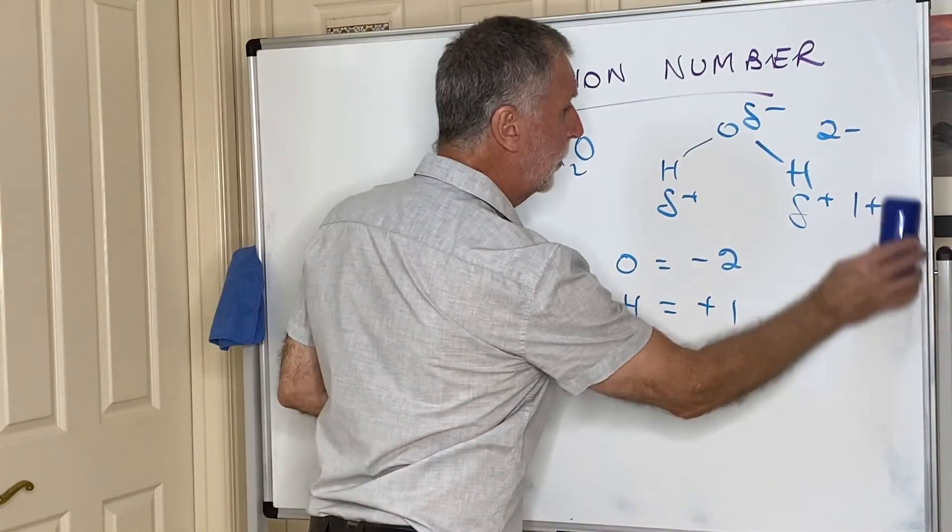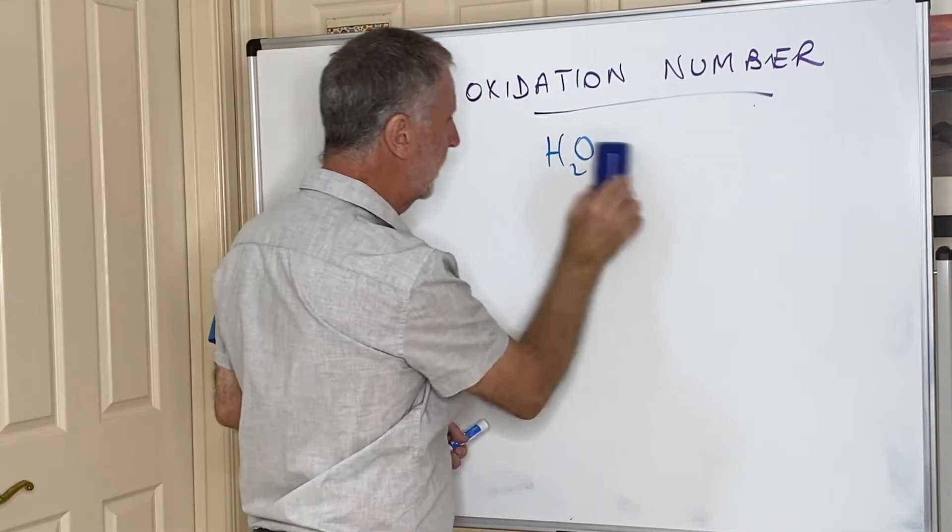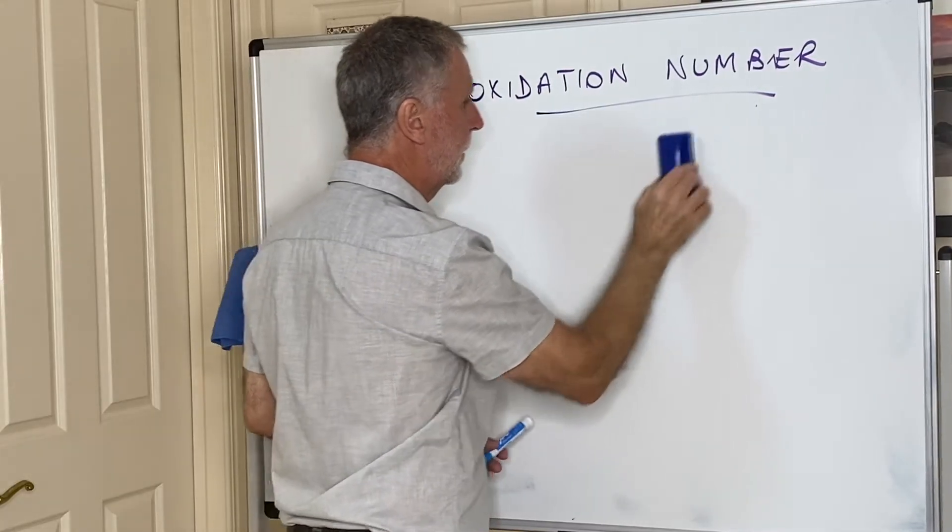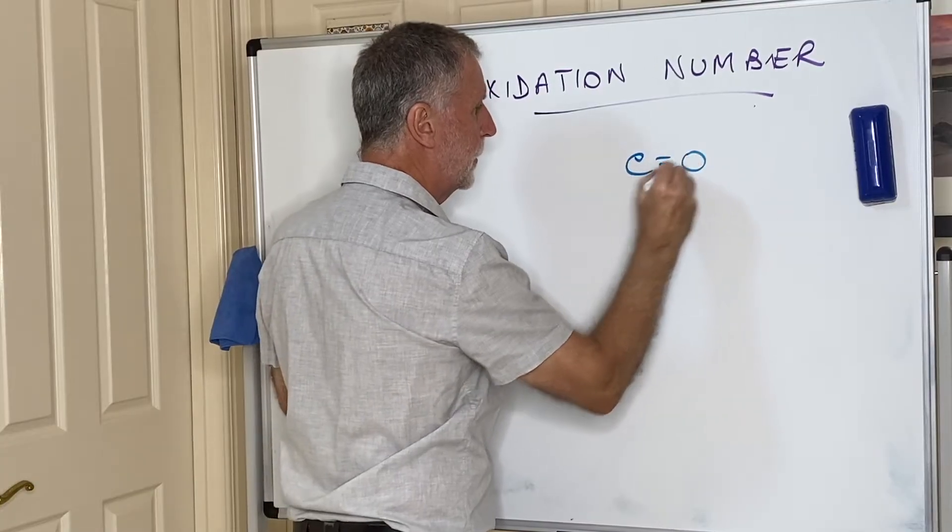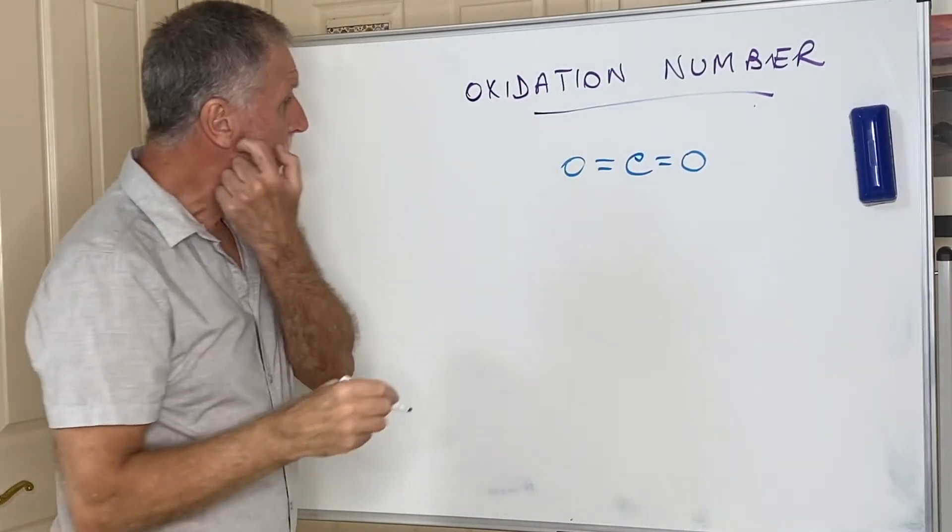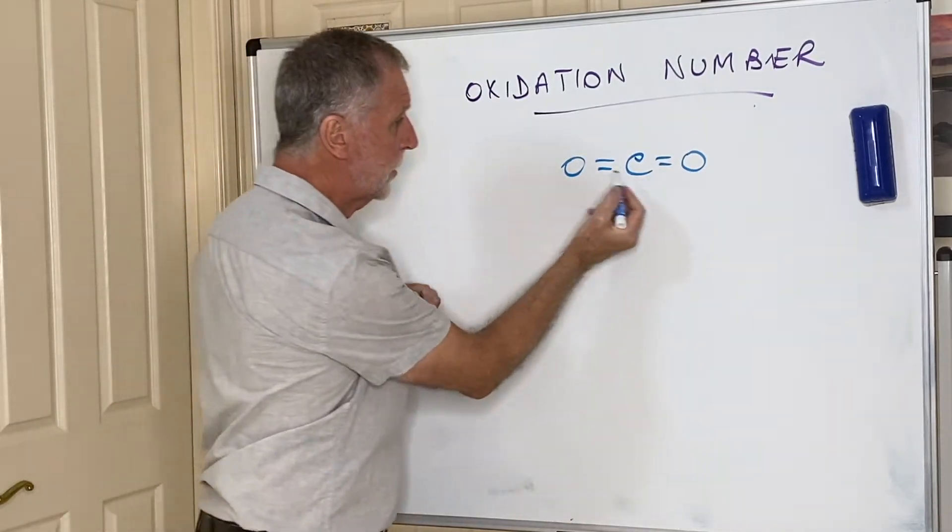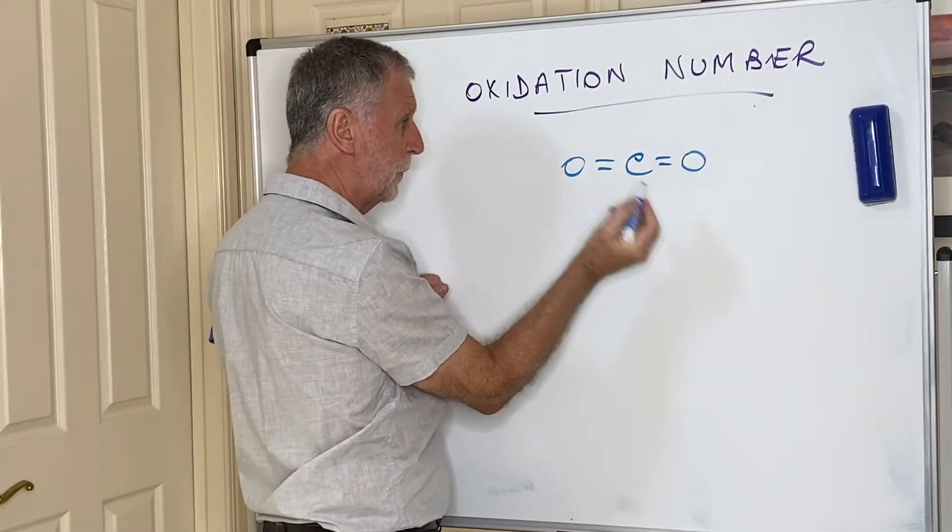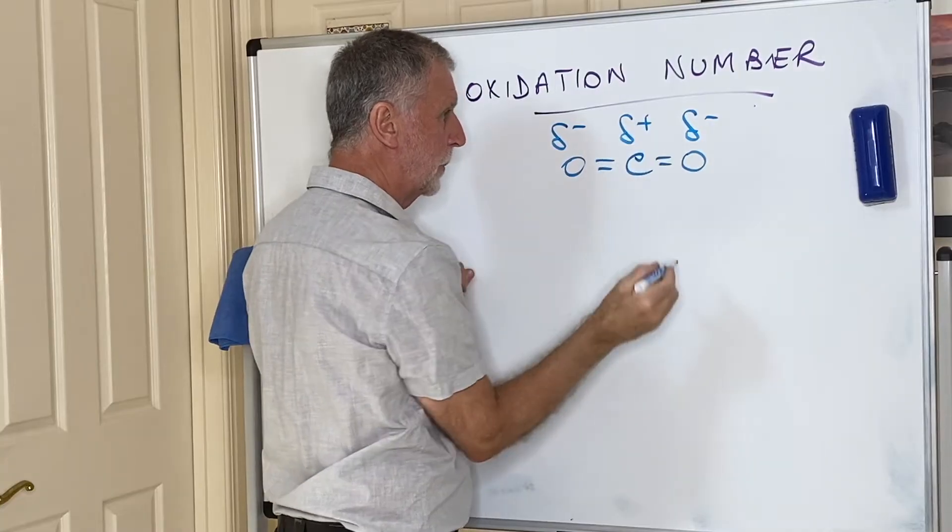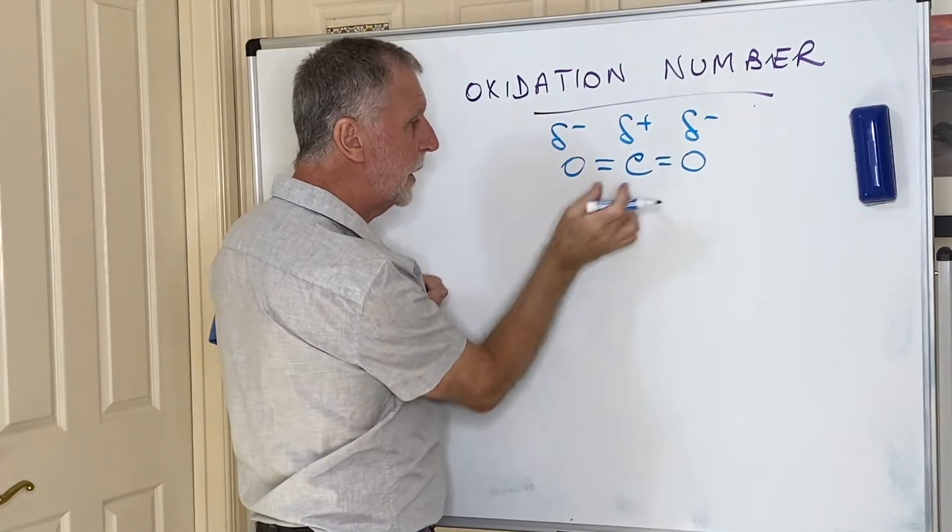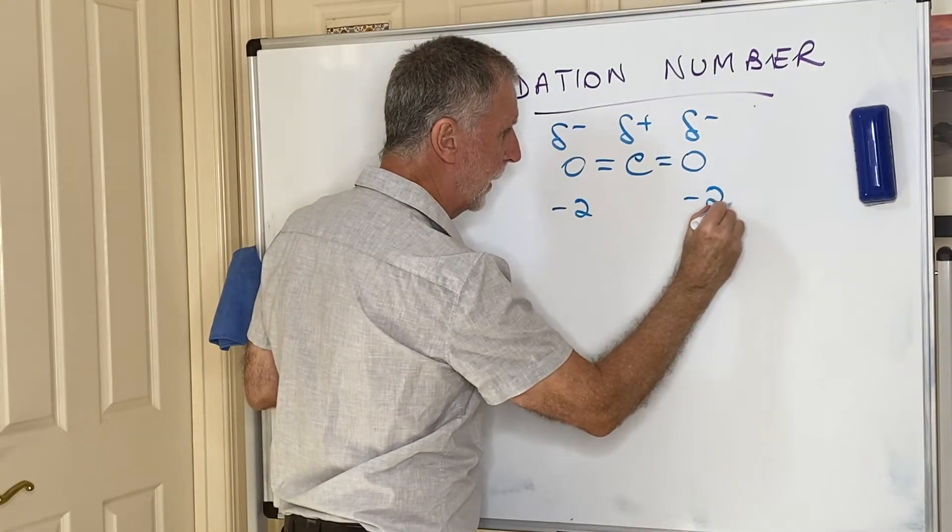Let's take another molecule that you're very familiar with, and that would be carbon dioxide. Carbon dioxide has carbon double bonded to oxygens. Oxygen is again way more electronegative than carbon, so oxygen will take the electrons towards itself, and that means it would become delta minus and the carbon would be delta plus. This time it's taking two electrons from the double bond, so this becomes -2 and that becomes -2.